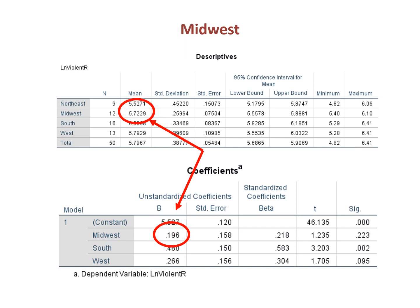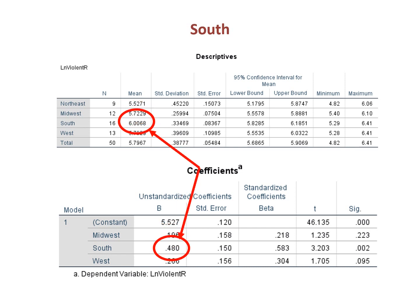We can recover the value of each region by adding the beta to the constant. The mean of Midwest is the constant of the equation, 5.527, plus the coefficient for Midwest, which is 0.196. The interpretation is that being in the Midwest increases the log of the violent crime rate by 0.196. The mean of South is the constant, 5.527, plus 0.480, which equals 6.007.